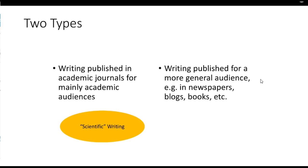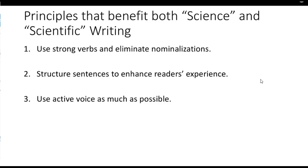Just as a reminder, there are two types of writing that scientists tend to do. There's scientific writing that is traditionally published in academic journals for predominantly academic audiences, and then writing published for more general audiences — like newsletters, blogs, books, etc. — which is mostly referred to as science writing. The principles I'm going over today really benefit both, particularly scientific writing. I wish more academics would write with these principles in mind, as it would make for much easier reading.